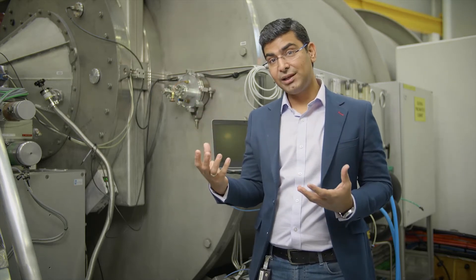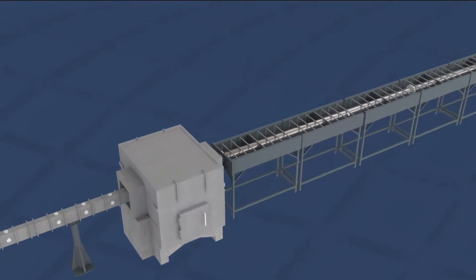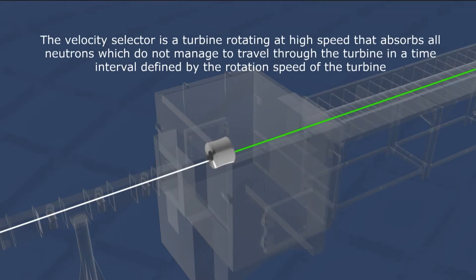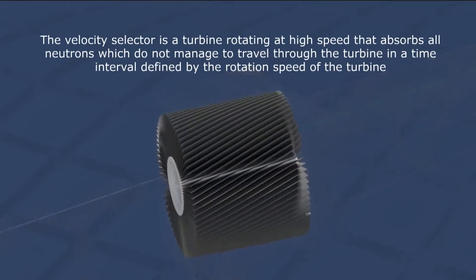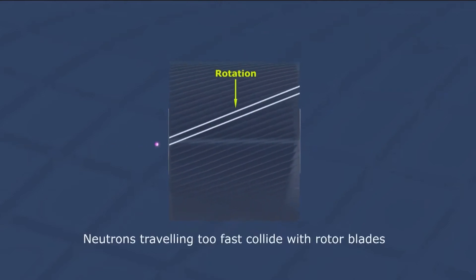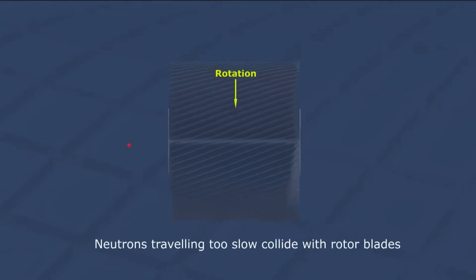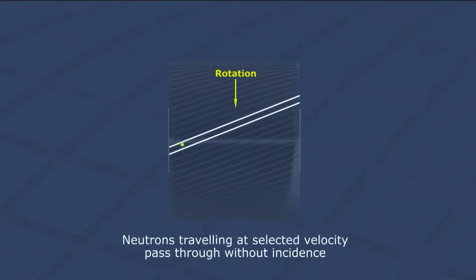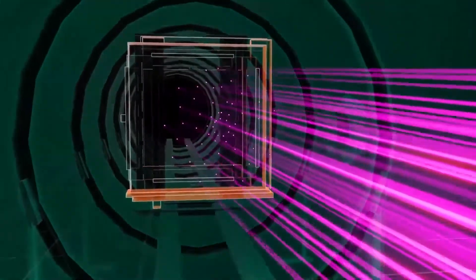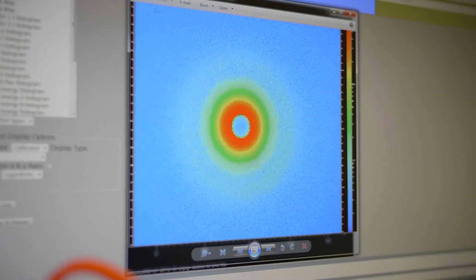QUOKKA uses neutrons from the reactor. It's a monochromatic instrument, so we select one wavelength of neutrons. We do this using a system called the velocity selector — it's a fast-rotating turbine. When a neutron goes through this turbine, it blocks any slow-moving or fast-moving neutrons and only allows one speed of neutron to pass through. This neutron then travels through the guide system, then goes to your sample. The sample scatters the neutrons and you collect this scattering on a one-meter by one-meter detector.